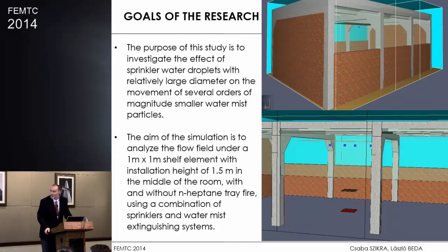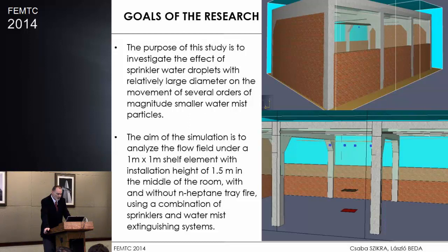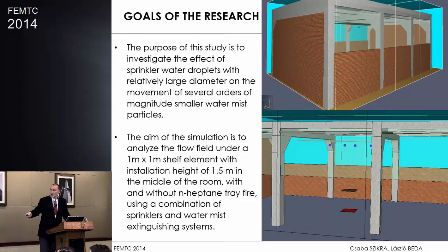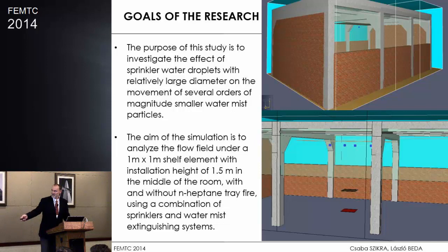We made a real-size test model. The reason we made that is because this is a real building where this kind of measurement will be carried out, so later we can make practical measurements there too. At 1.5 meter height, we placed one-meter-by-one-meter shelf elements. There were two sets of simulations: one set with fire and another set without fire. You can see the placement of the fire and the sprinkler and water mist heads, which were placed symmetrically in the model.